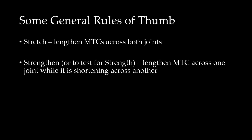Second, if you want to strengthen or test the strength of a biarticular MTC, then you want to lengthen it across one joint while shortening it across another. By doing so, you are trying to keep the MTC's length around the plateau of the force-length curve, so that you can maximize its force-producing capability. Of course, the same idea can be used if you want to decrease the force-producing capability of a biarticular MTC — you do this if you want to maximize the contributions of its synergists.